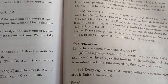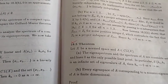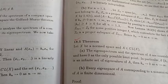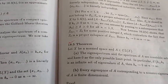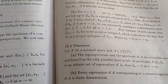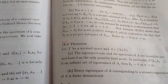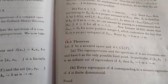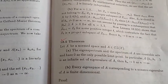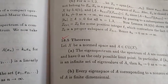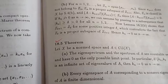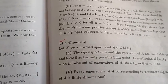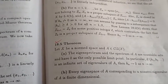Now assume if k_n does not tend to 0 as n tends to infinity, then there exists delta greater than 0 such that the norm of k_n is greater than or equal to delta for all n. By Riesz's lemma, there exists z_l in Z_{l+1} such that the distance from z_l to Z_l satisfies a certain bound.